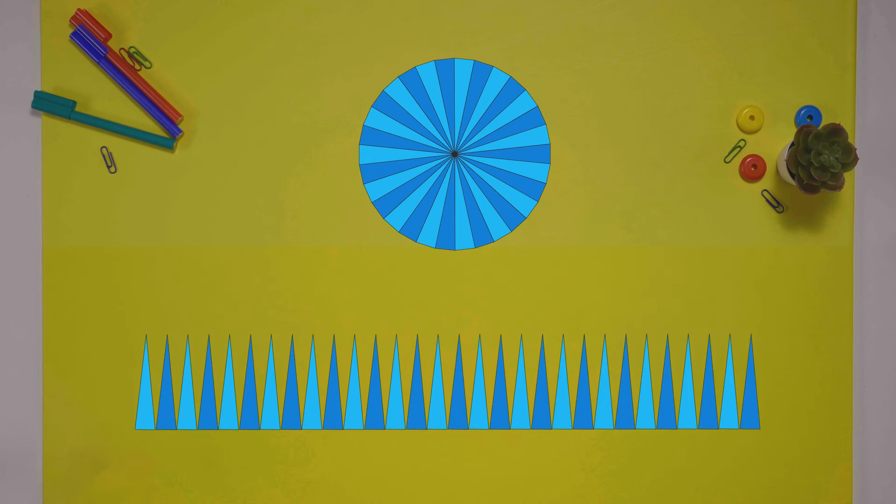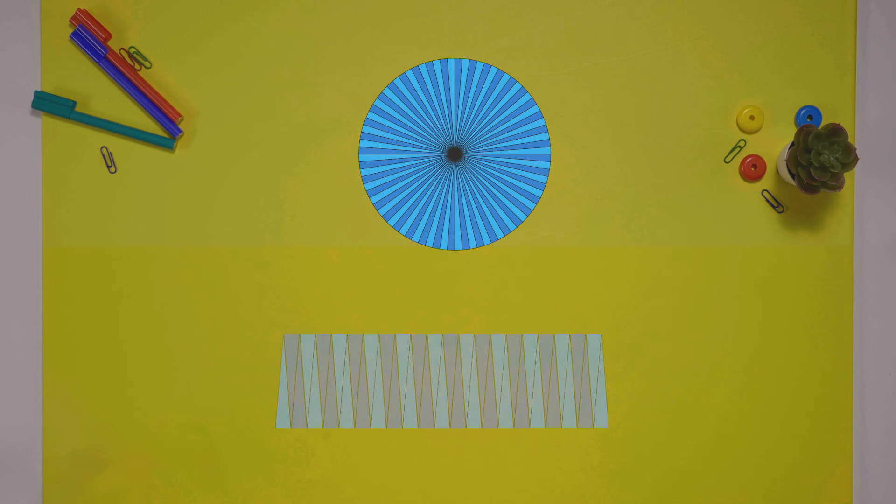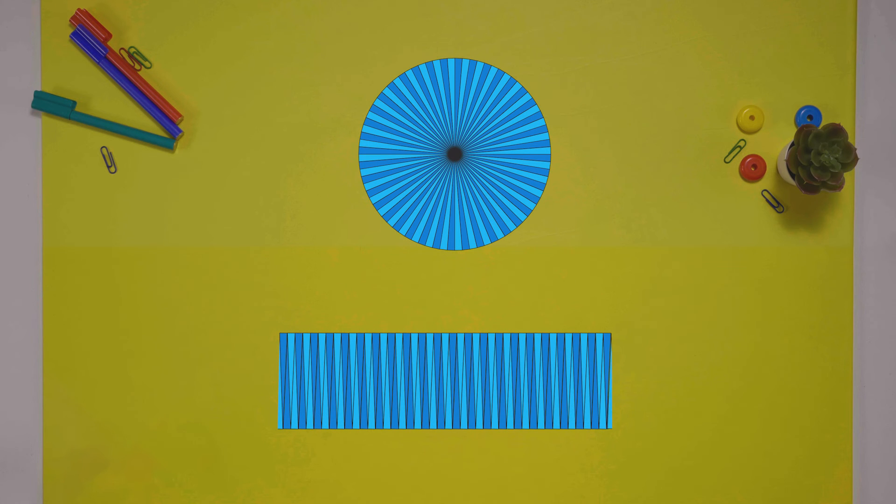What happens if we keep dividing the circle into smaller and smaller parts? Eventually, these parts become infinitely small. When we rearrange them, the curves at the top flatten out and this shape becomes a perfect rectangle.